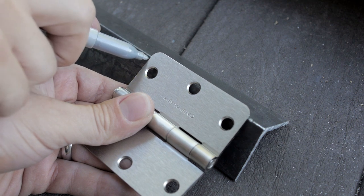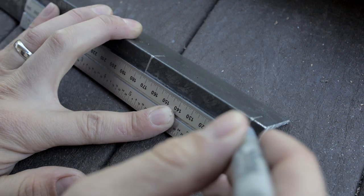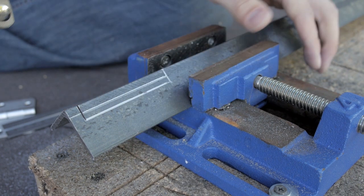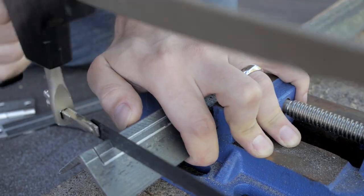To center the pivot point on the edge of the angle, we need to recess the hinges. This ends up being pretty tricky because you have to cut a slot in the angle.